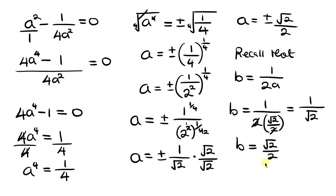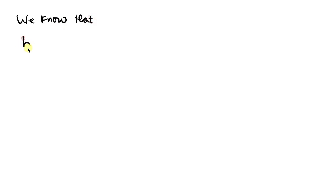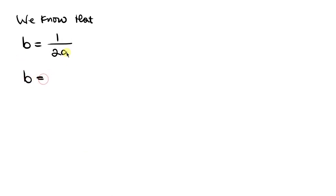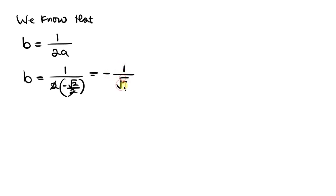For the negative value a = −√2/2: b = 1/(2 · (−√2/2)) = 1/(−√2) = −1/√2. Rationalizing gives b = −√2/2.